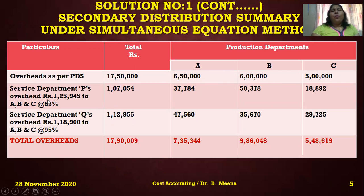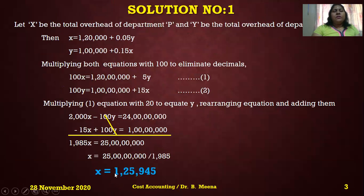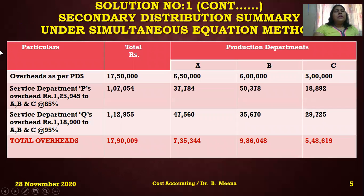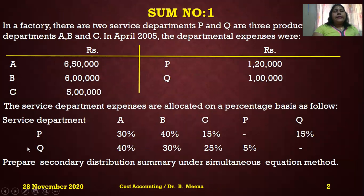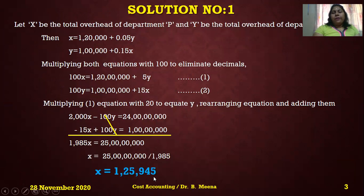Next, apportion service department P's overhead of x = 1,25,945 to production departments A, B, and C. P serves A at 30%, B at 40%, and C at 15%, totaling 85% going to production departments. So 1,25,945 is distributed at 85% total across A, B, and C using their respective percentages.